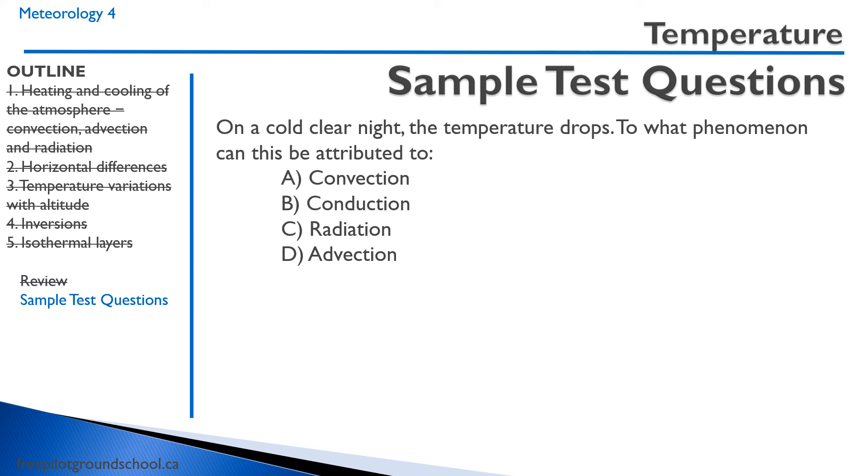A few sample test questions. On a cold, clear night, the temperature drops. To what phenomenon can this be attributed to? A. Convection. B. Conduction. C. Radiation. D. Advection. So remember, cold, clear nights, the heat from the earth ends up radiating into space. Correct answer, C. Radiation.